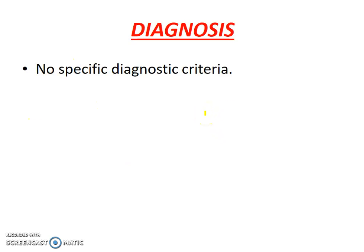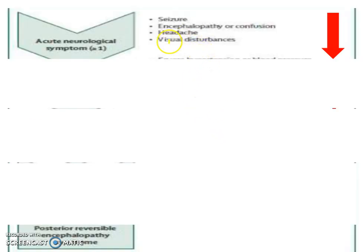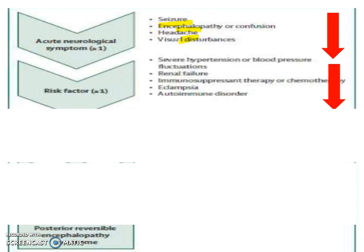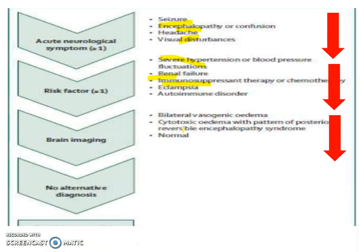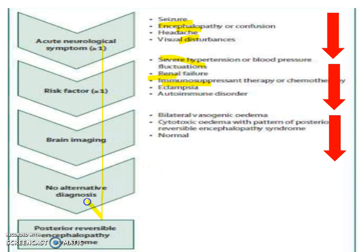There is no specific diagnostic criteria for this condition. Whenever a patient presents with the cardinal features of PRES — seizure, encephalopathy, headache, or visual disturbance — inquire about risk factors: look for hypertension, autoimmune diseases, drug use, or pregnancy. On MRI, if you are getting hyperintense bilaterally symmetrical lesions and no other alternative diagnosis is possible, you arrive at the diagnosis of PRES. Always keep this possibility in mind when working in the emergency department.